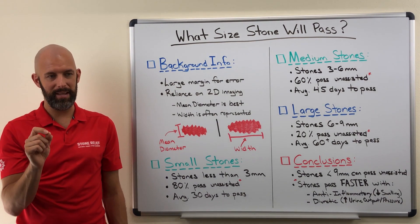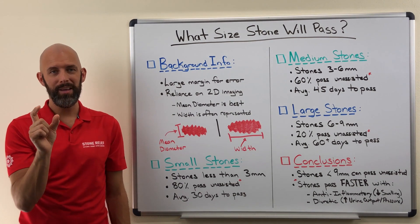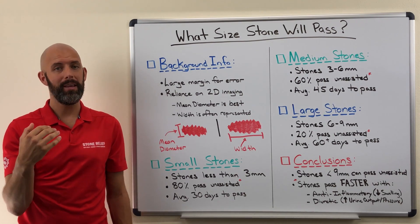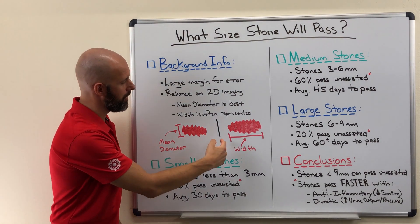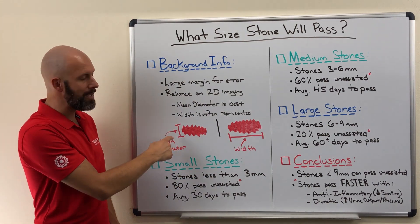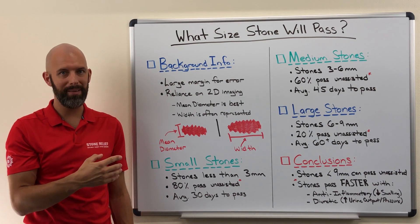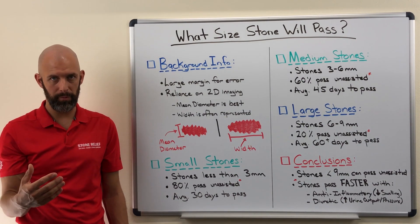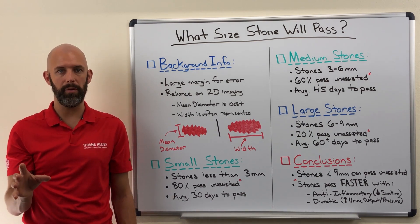I've personally had this happen a number of times, where they've given me a measurement like a nine millimeter stone — that's not necessarily indicative of the diameter my urinary system will deal with, but the width. Trying to pass a stone that is wide through a three to four millimeter tube such as your ureter is going to be problematic. However, you can have stones that are nine millimeters or longer, but their actual mean diameter is more manageable — five, six, seven millimeters — versus a much larger measurement of nine to ten millimeters. Keep that in mind when you get this data from your doctor.